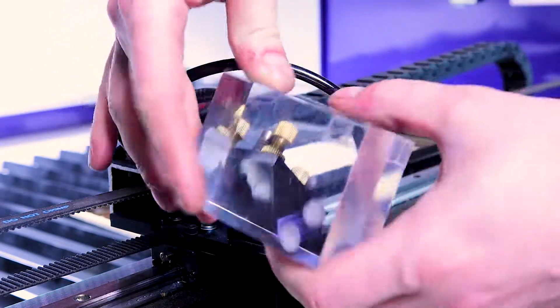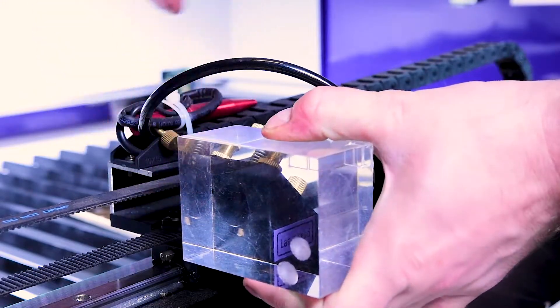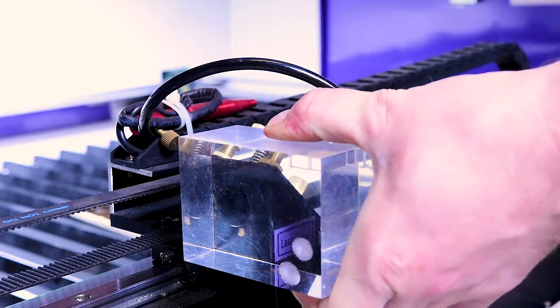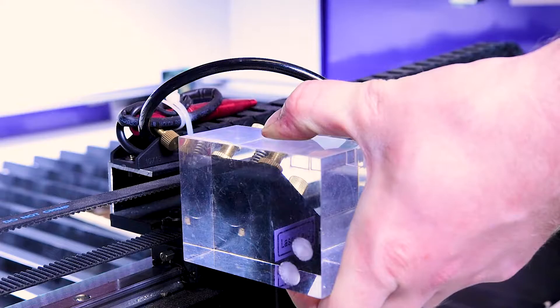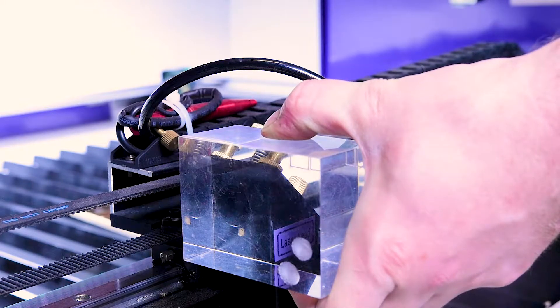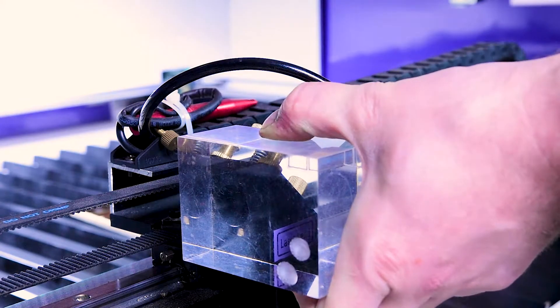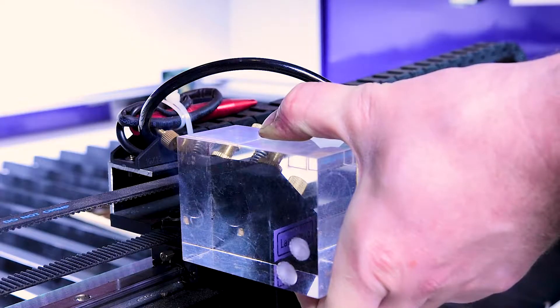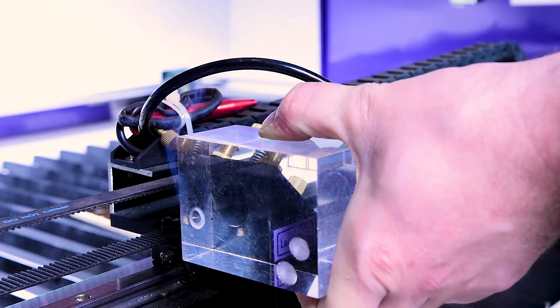So 20 percent and 50 percent look pretty much identical other than the depth difference. So if we drop down to say 16 percent power which is where we know it's definitely in that ring shape, let's see how this looks. I don't know if we'll even be able to mark the acrylic like this. Definitely getting a ring.